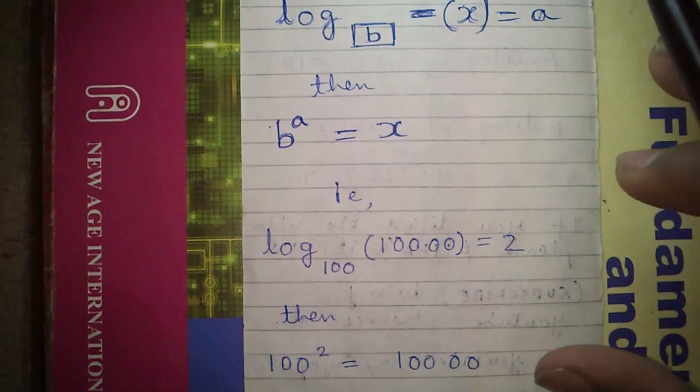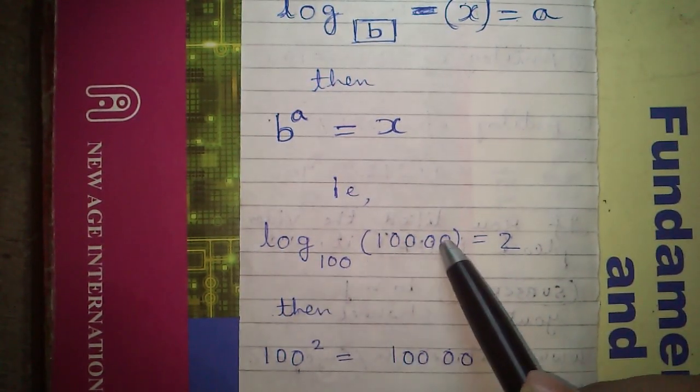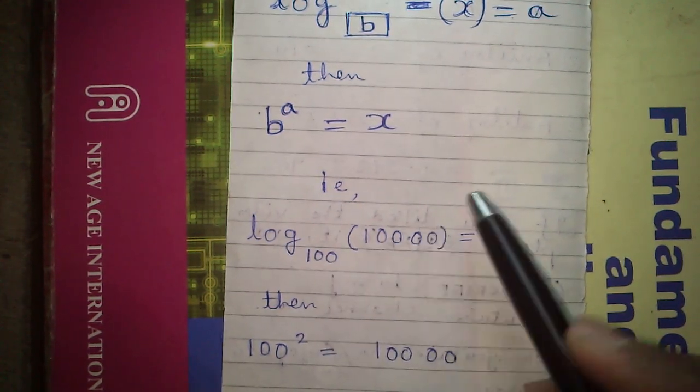What does that mean? Say if log base 100 of 10,000 equals 2, then we can say 100 to the power 2 will be 10,000.